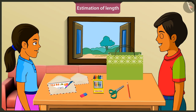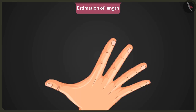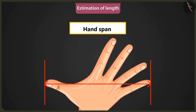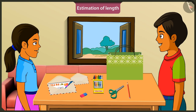Some people use these units even today to estimate the length. Then can I find the length of this window using my palm to measure it? Yes, Mintu. The distance between the tip of one's thumb to the tip of the pinky finger is called a hand span. You can use hand span to find the length of the window.